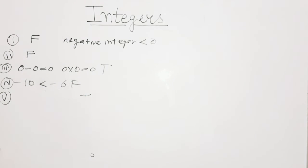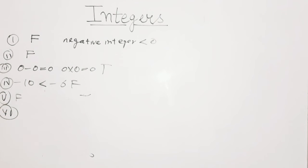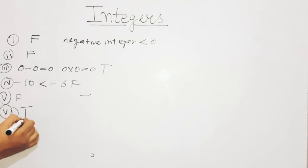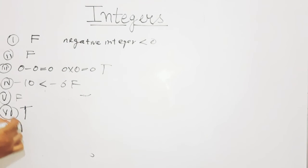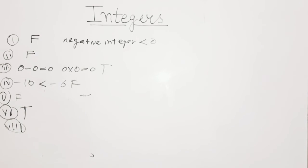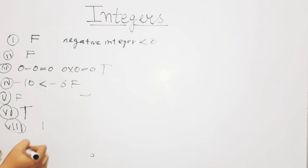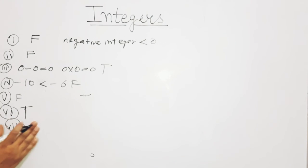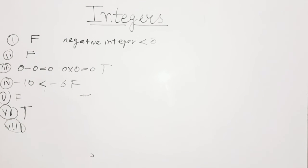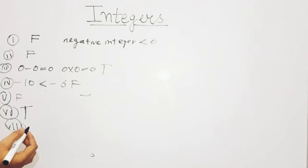Sixth statement: 0 is larger than every negative integer. This is true. Seventh statement: every negative integer is less than every natural number. This is true, because natural numbers start from 1 and all negative integers are on the left side of the number line, smaller than 0 and therefore smaller than 1.